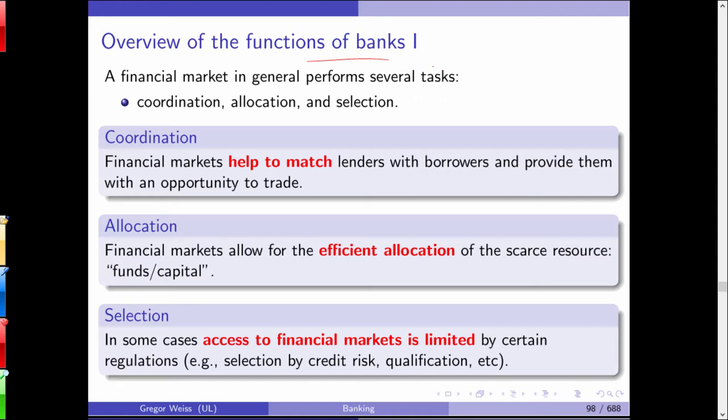By just listing these basic functions — coordination, allocation, and selection — we cannot fully explain the existence of a bank. One could easily think of fintech companies, insurance companies, or other companies that can also offer these services, and we still need to ask ourselves why we need a bank. The Diamond model is a little bit more comprehensive in this respect.